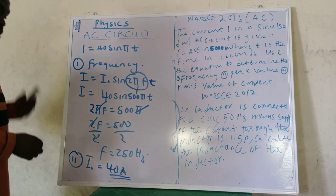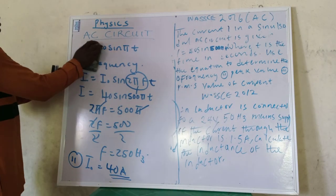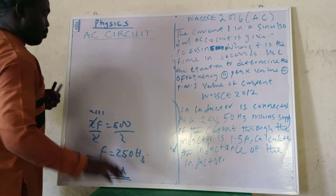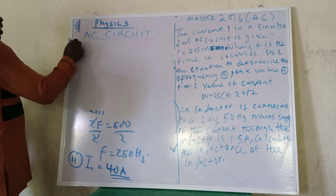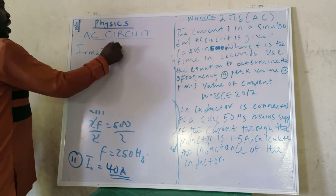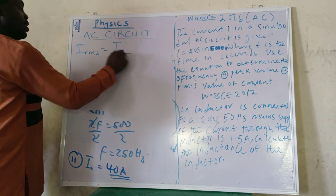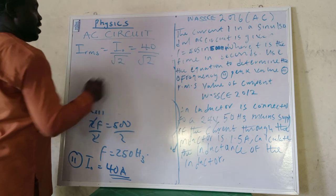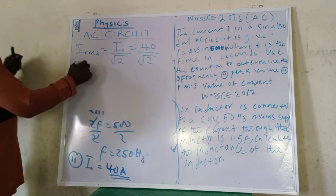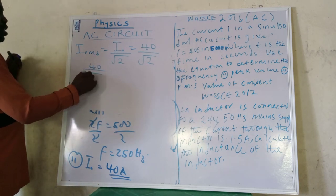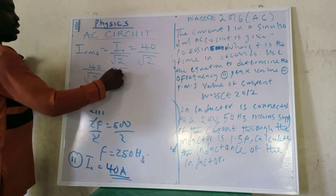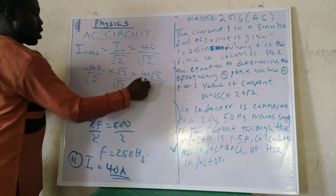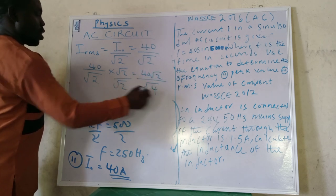And that's the root mean square value. So how do we find the root mean square value? What's the formula again? Please help me out. Root mean square current is what? I naught over root 2, thank you. What's this? 40.